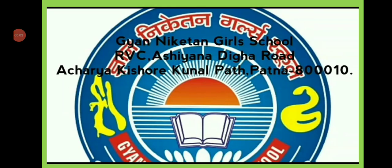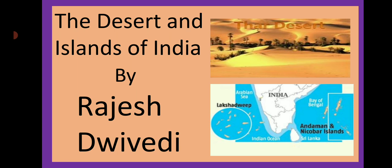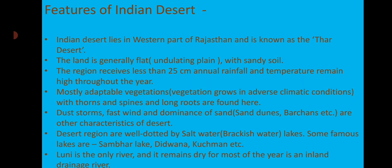Hello students, myself Rajesh Divedi, and today I am here with a new video on the deserts and islands of India. First, the desert. The features of the Indian desert: the Indian desert lies in the western part of Rajasthan and is known as the Thar desert. The land is generally flat, meaning it has an undulating plain with sandy soil.